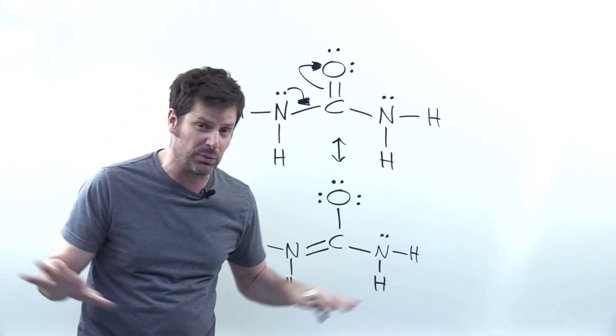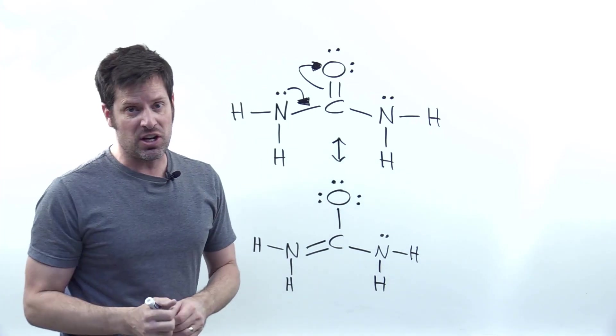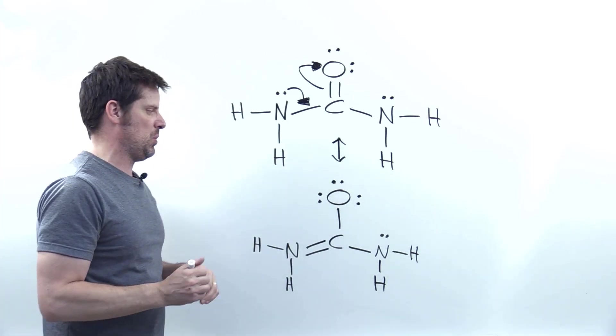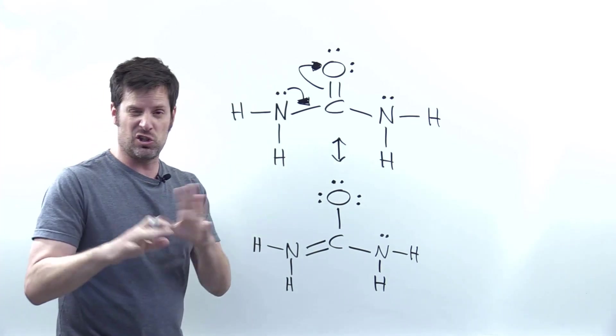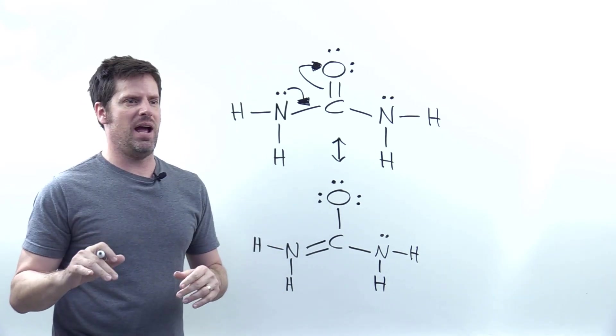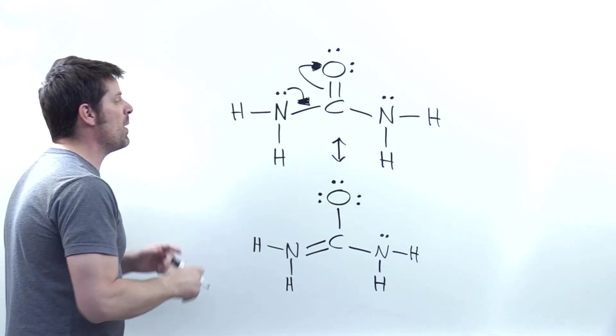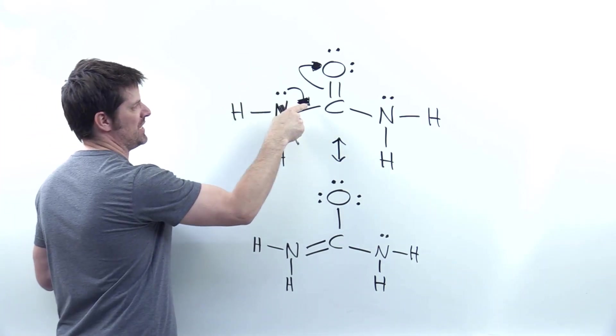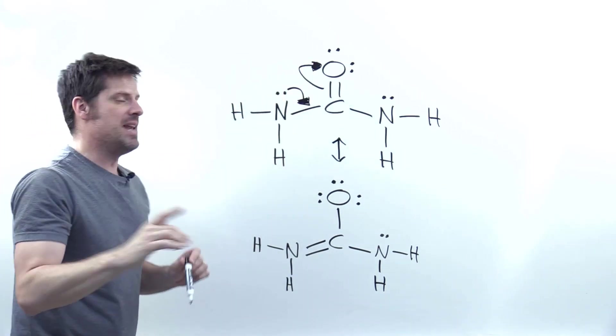In any event, the actual molecule is sort of a blend of all of them. As far as this question goes, however, we just need to draw these two, because there aren't any others that look super reasonable without giving ten electrons to some atom, or having only six electrons around another, or something like that. The point is, you just draw a flow of lone pairs in, and then pi bonds out.